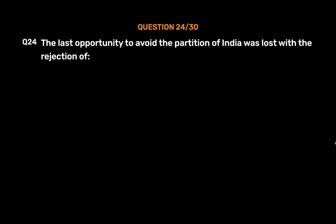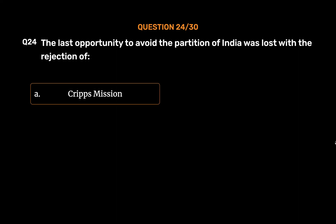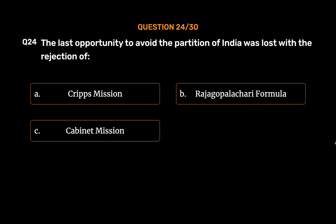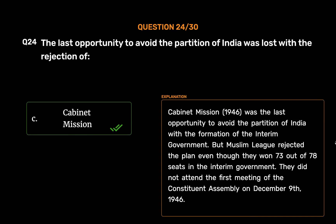Question No. 24. The last opportunity to avoid the partition of India was lost with the rejection of: Option A: Cripps Mission. Option B: Rajagopalachari Formula. Option C: Cabinet Mission. Option D: Wavell Plan. The correct answer is Option C: Cabinet Mission. The Cabinet Mission, 1946, was the last opportunity to avoid the partition of India with the formation of the interim government. But the Muslim League rejected the plan even though they won 73 out of 78 seats in the interim government. They did not attend the first meeting of the Constituent Assembly on December 9, 1946.